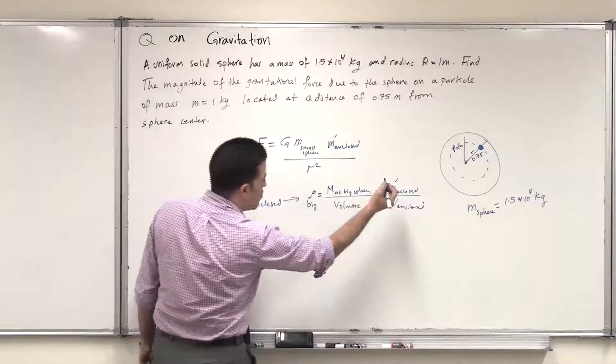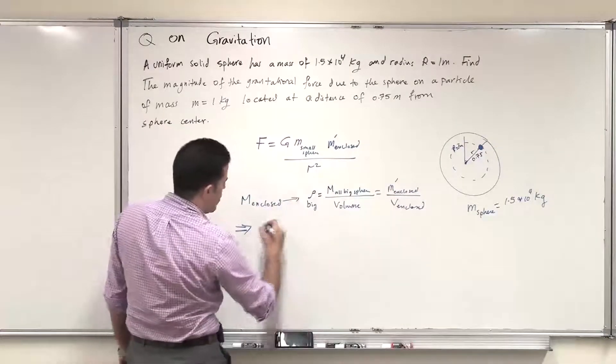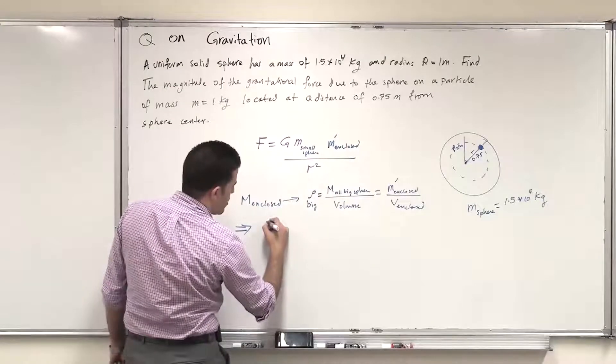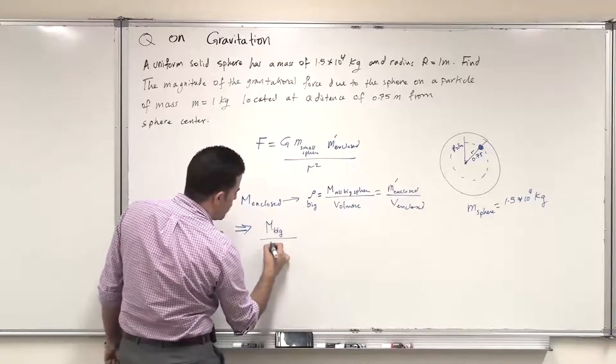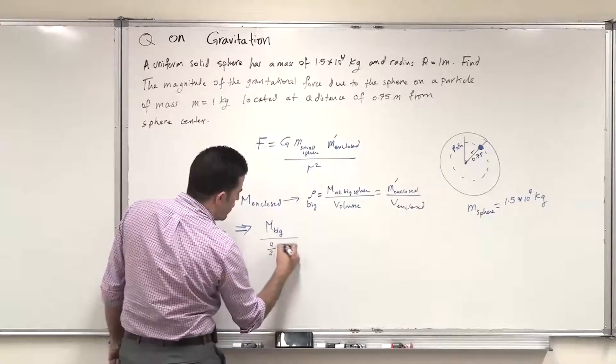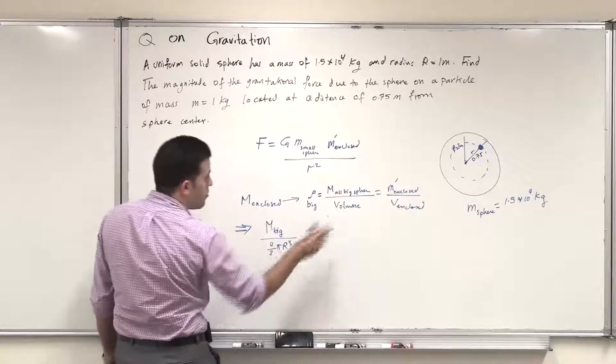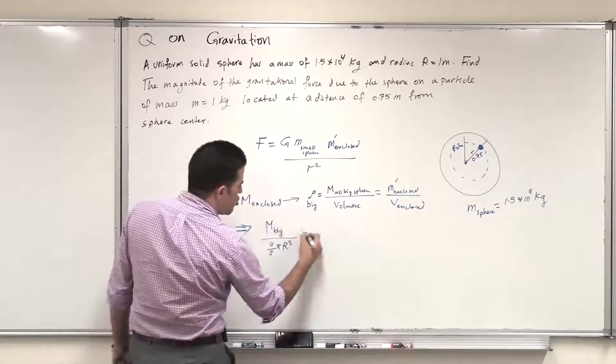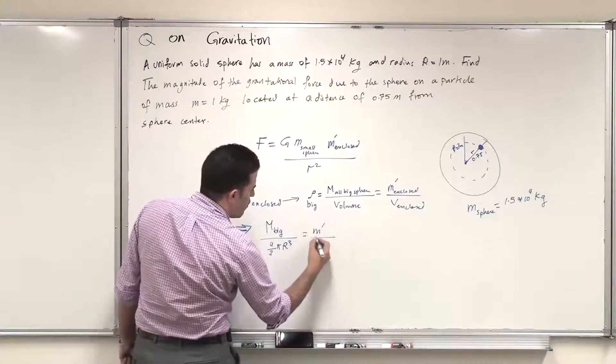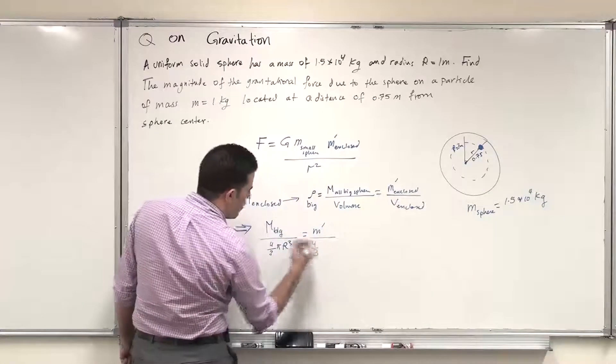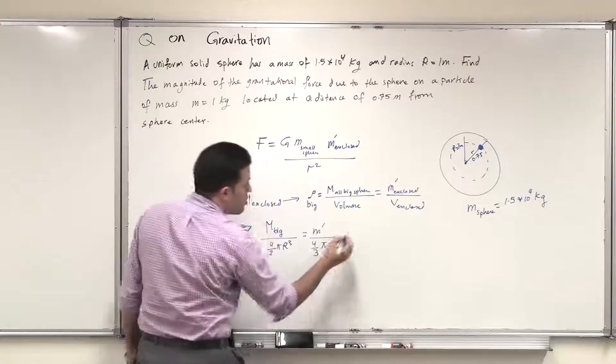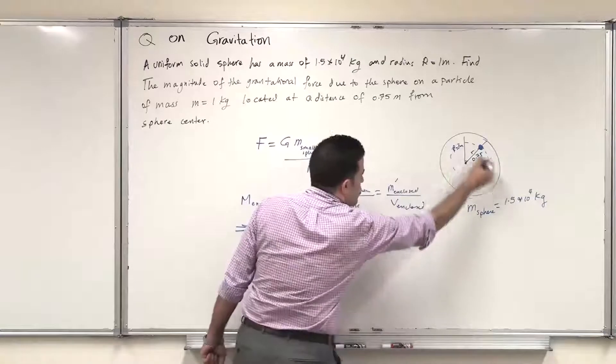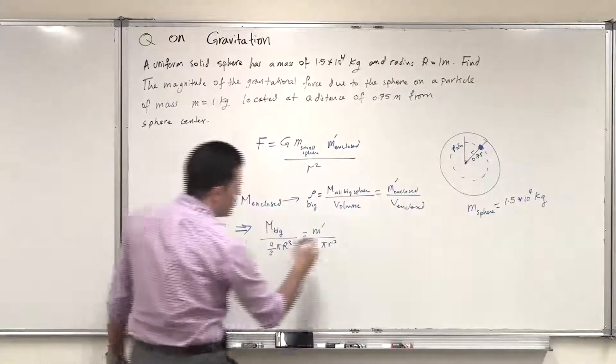So mass of the big sphere is M divided by the volume of the big sphere, 4/3 π R^3. This is the big R because it's for the whole sphere. Should equal m prime divided by 4/3 π r^3 small, because we are targeting this small sphere.